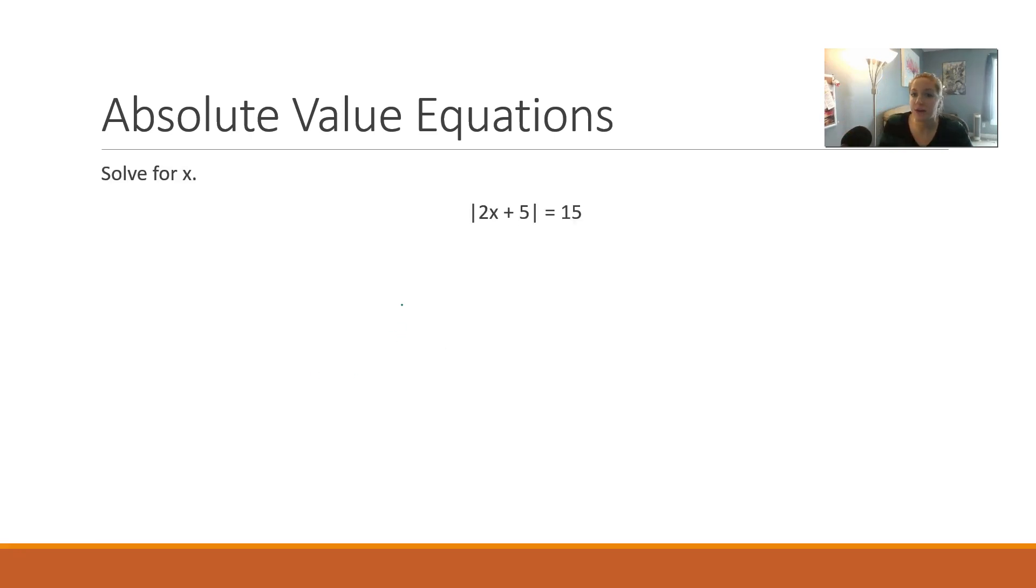Here we are on our first absolute value equation. So what's inside that absolute value, 2x plus 5, we want to set this equal to what's outside the inequality, which would be 15.